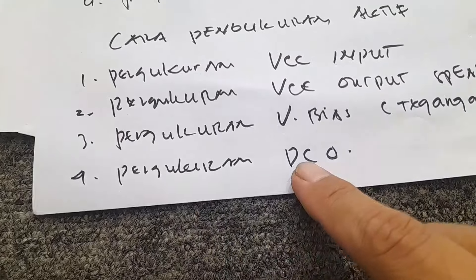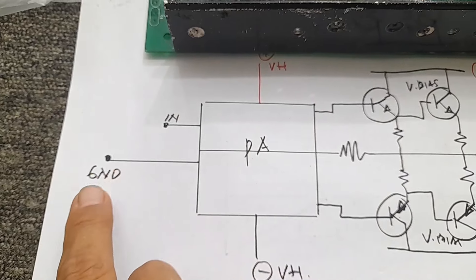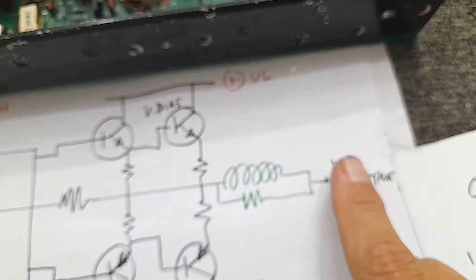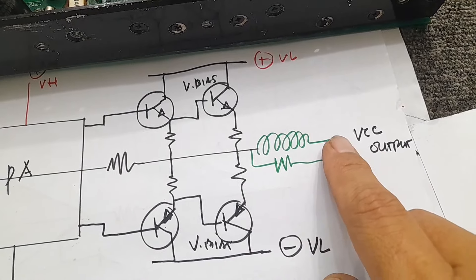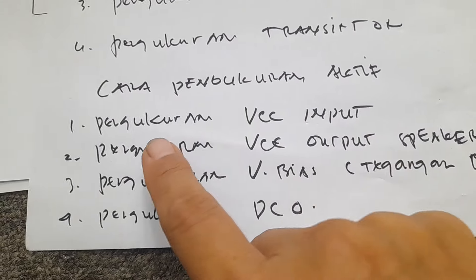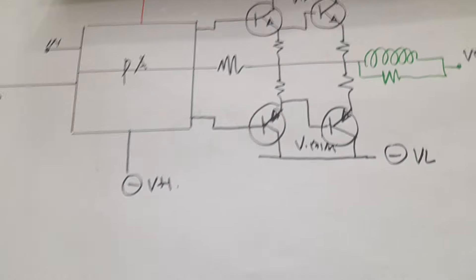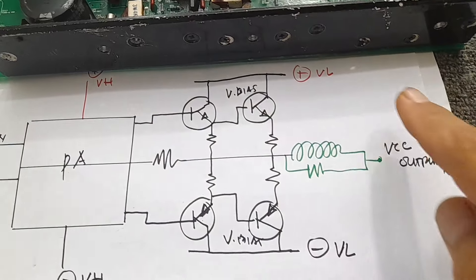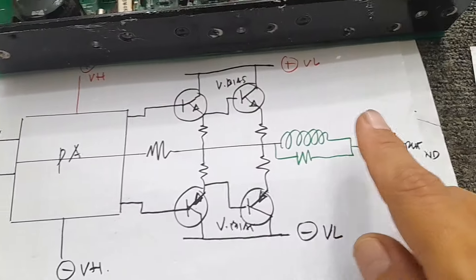Selanjutnya adalah pengukuran DCO. Pengukurannya dari ground ke output speaker. Tegangan DC-nya sebaiknya adalah 0. Pengukuran DCO berbeda dengan pengukuran PCC output. Cara pengukuran PCC output adalah dari plus ke output speaker dan dari min ke output speaker, sedangkan pengukuran DCO itu dari ground ke output speaker.